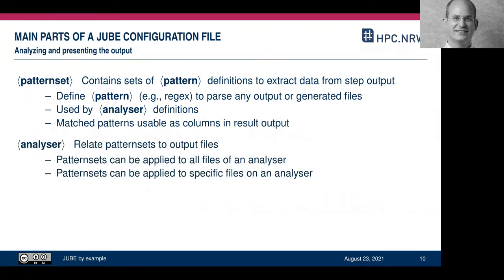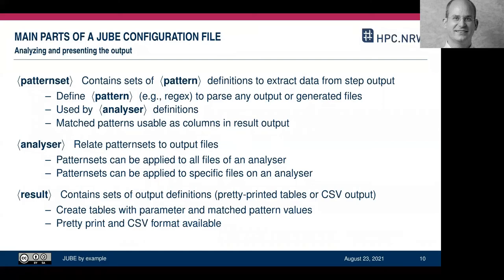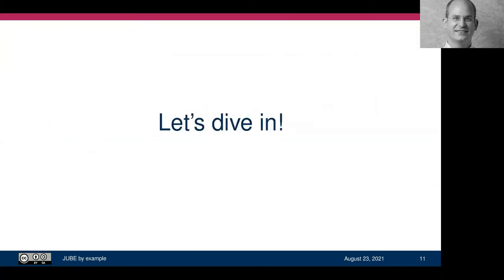The analyzer relates pattern sets to output files — you define which pattern set to apply to which file, or globally to any file. Finally, you have a result table that contains output definitions — either pretty-printed or CSV — where you define your columns using parameters and patterns. That is a basic overview of the main tags in your JUBE configuration.